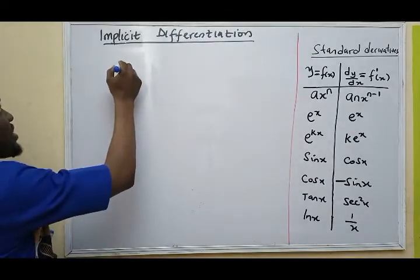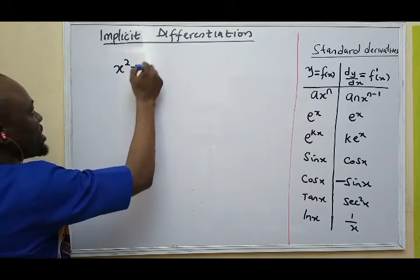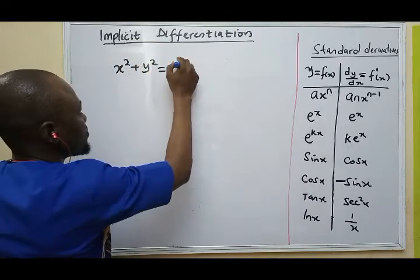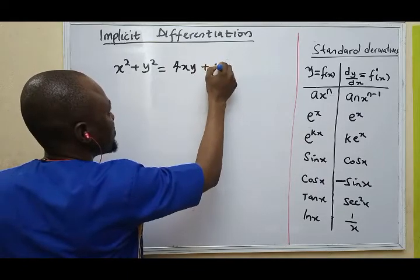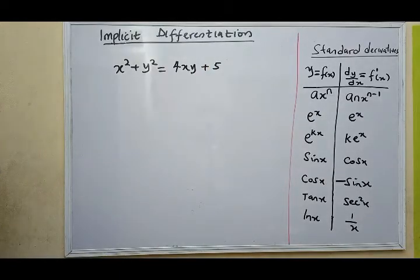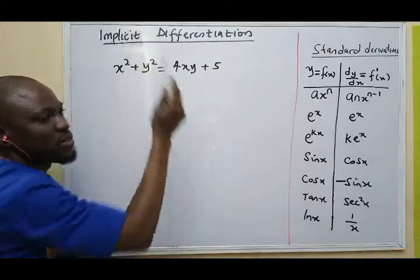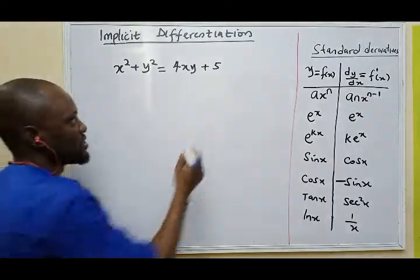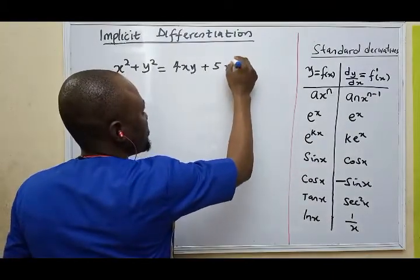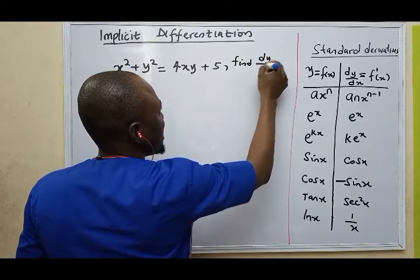For instance, if I have x squared plus y squared equals 4xy plus 5. Now, if you have this kind of question, you can see that x and y are fully involved in such a way that I can't be able to separate them. The question says find dy/dx.